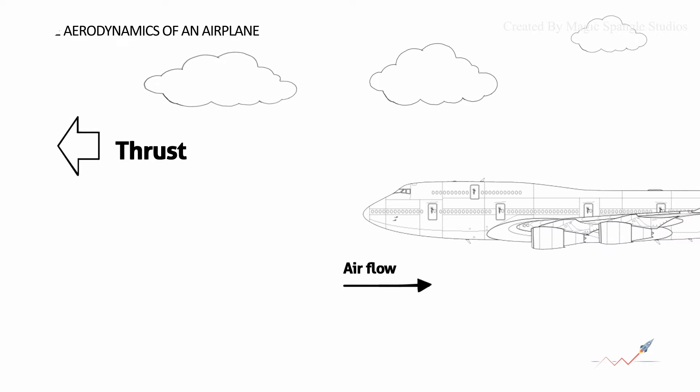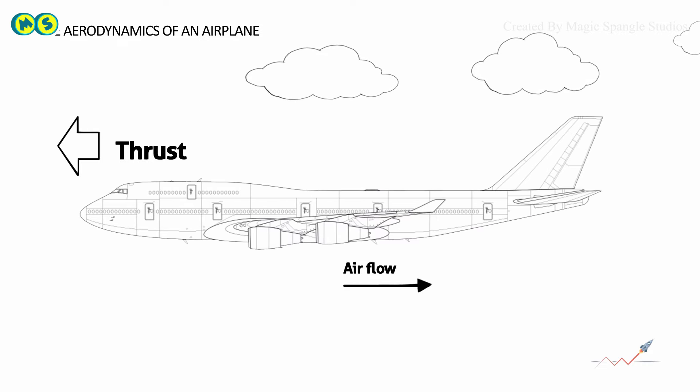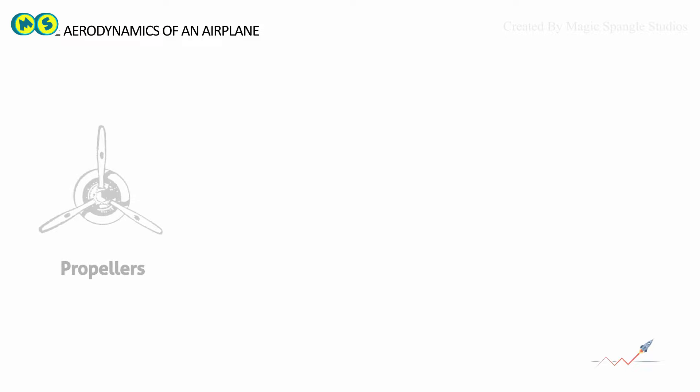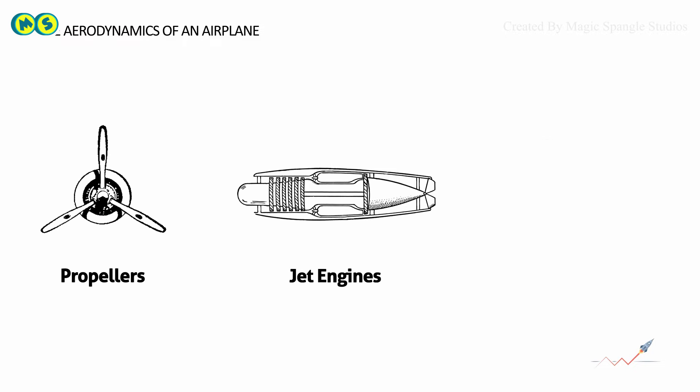Thrust counters drag. It is a mechanical force that keeps the airplane moving in the air. Thrust is generated by propellers, jet engines, or rockets.